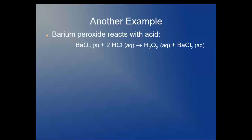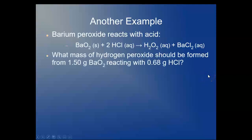Here's another example. Barium peroxide will react with an acid. We use hydrochloric here to form hydrogen peroxide, your old favorite from the medicine cabinet that will treat wounds. So we ask what mass of hydrogen peroxide should be formed if you have 1.5 grams of barium peroxide reacting with 0.68 grams of hydrochloric acid. Go ahead and solve this problem with or without a RECA table. I suggest with, and check the answer by moving forward in the video.